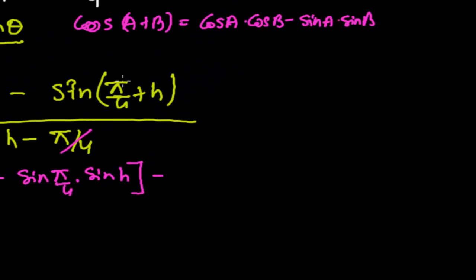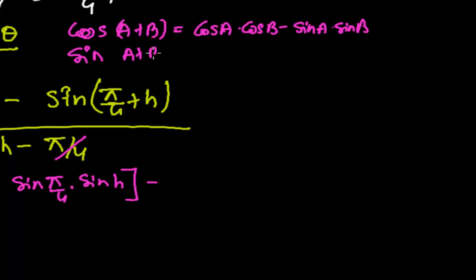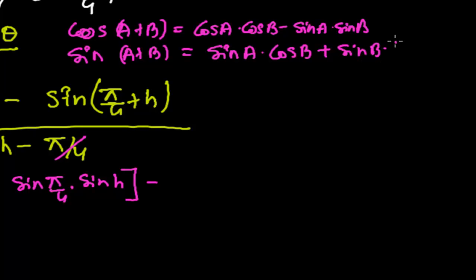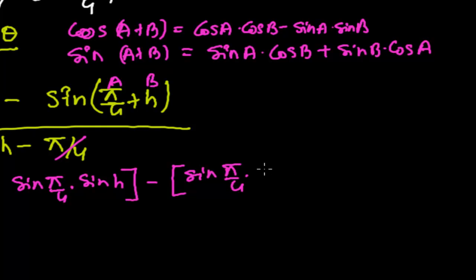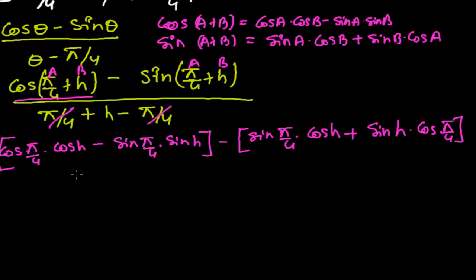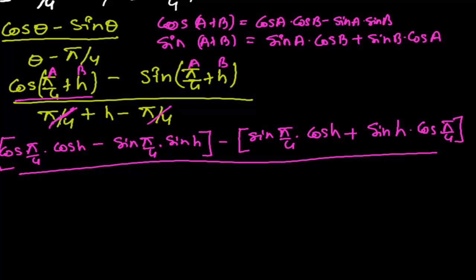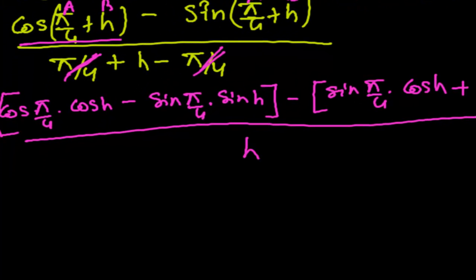Sine(pi by 4 plus h) is of the form sin(A+B). The formula is sin A·cos B + cos A·sin B. Applying this: sin(pi by 4)·cos h + cos(pi by 4)·sin h. This whole numerator is divided by h, since the pi by 4 terms in the denominator cancelled to give just h.